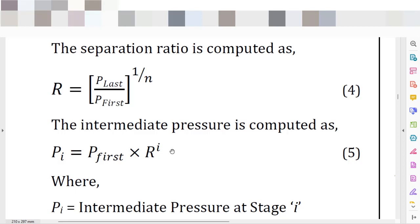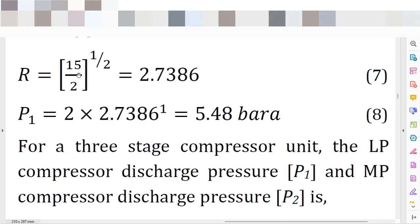To exemplify this, consider the case study in the e-book: we have a required discharge condition of 15 bar A and an inlet condition of 2 bar A. The global pressure ratio is 15 divided by 2, which gives 7.5 — dimensionless. Because we are evaluating a two-stage compression system, we take the square root of 7.5, which gives 2.7386 as the interstage pressure ratio. To find the discharge pressure of the first stage, we multiply the inlet condition of 2 bar A by 2.7386, which gives 5.48 bar A.